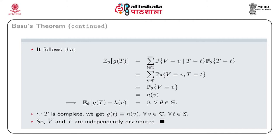Since T is complete, there does not exist any non-trivial function of T which is an unbiased estimator of 0. Therefore, E_θ[g(T) − h(v)] = 0 for all θ implies that g(T) = h(v) with probability 1, for all v ∈ script V and all t ∈ script T. Thus the conditional distribution of V given T is the same as the marginal distribution of V, and hence V and T are independently distributed.